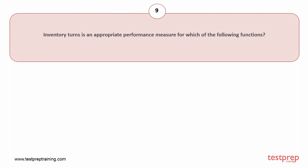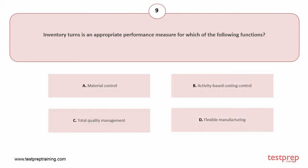Question number nine: Inventory turns is an appropriate performance measure for which of the following functions? Your options are: A) material control, B) activity-based costing control, C) total quality management, D) flexible manufacturing. The correct answer is option A.